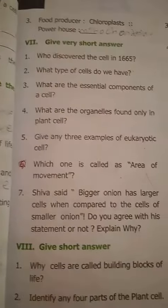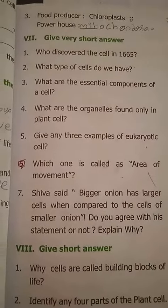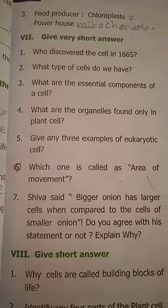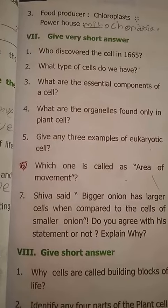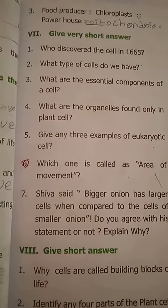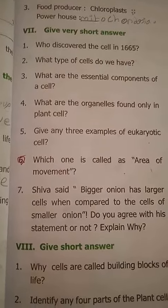Then, Roman letter 7. Give very short answers, one line each. Who discovered the cell in 1665? Answer: Robert Hooke.